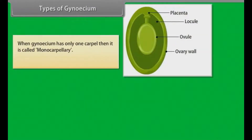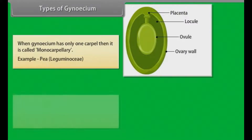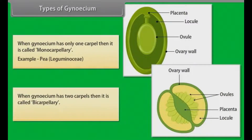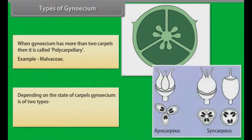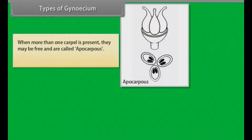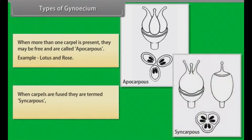When gynoecium has only one carpel, it is called monocarpellary; example, Leguminosae. When gynoecium has two carpels, it is called bicarpellary; example, Solanaceae, Cruciferae. When gynoecium has more than two carpels, it is called polycarpellary; example, Malvaceae. Depending on the state of carpels, gynoecium is of two types: Apocarpous — when more than one carpel is present and they are free; example, Lotus and Rose. Syncarpous — when carpels are fused; example, Mustard and Tomato.